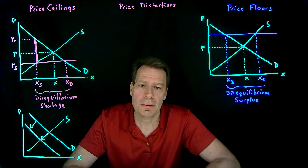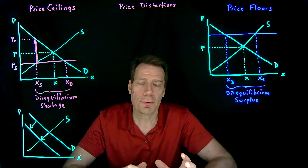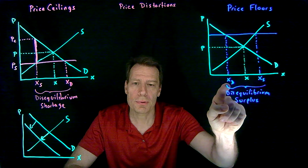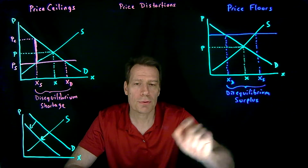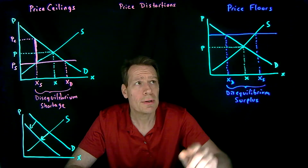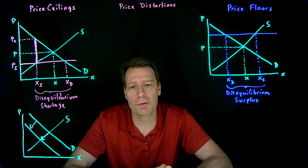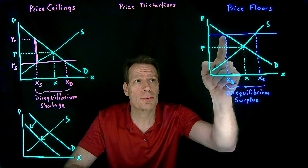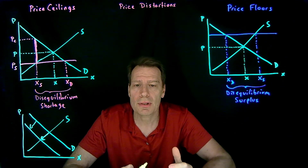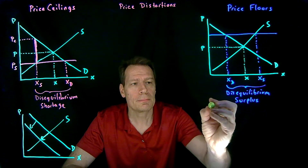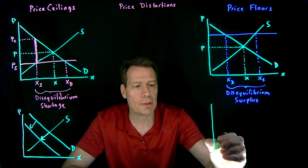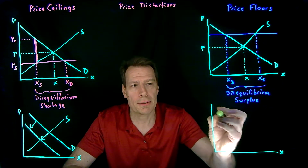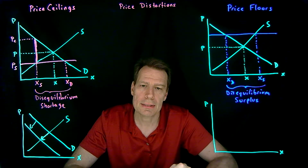In the price floor case, we've got a kind of reversal. Suppliers are providing more than what consumers are demanding — we have a surplus. So now it's the firms that are going to have to worry. They would love to sell at this high price, but they have to find a way of getting the goods to the consumers who want them because there's a limited number of consumers. So they're going to have to exert effort to make sure they're the ones able to sell their goods, because they don't want to get stuck with goods they can't sell.